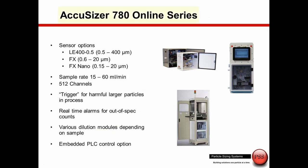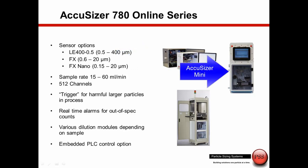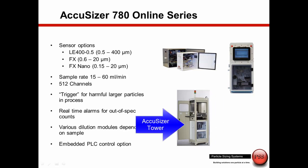Any of the sensors discussed today — the LE400, FX, or FX-nano — can also be mounted online for in-process measurements, either measuring the sample undiluted or with dilution. Systems are available for single-point monitoring, such as the online AccuSizer and the mini system popular for CMP slurry monitoring. A tower system can multiplex four different fluidics lines into one system, monitoring up to four different CMP slurry lines. Everything is fully automated with reporting, alarming, and output to programmable logic controllers.